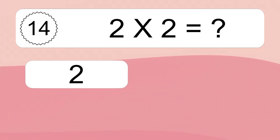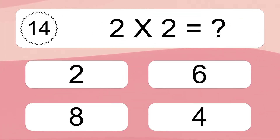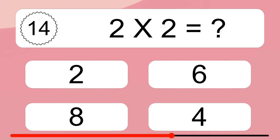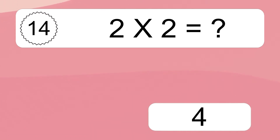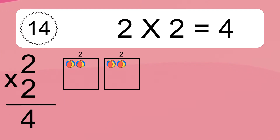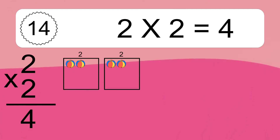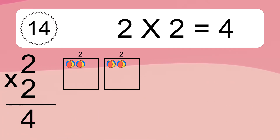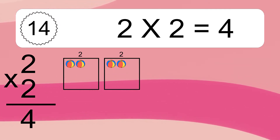2 times 2 equals 4. We have 2 boxes and each box has 2 colorful balls inside. If you count all the balls in all the boxes together, you will have 2 times 2 balls. This equals 4 balls.